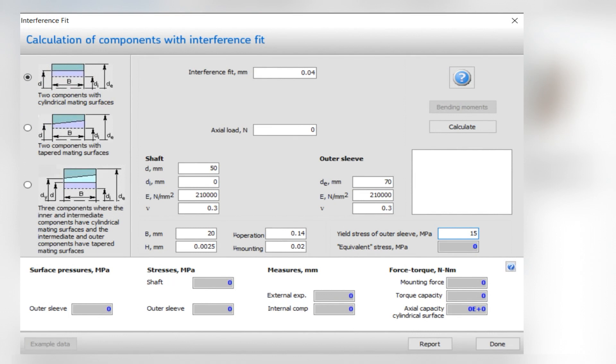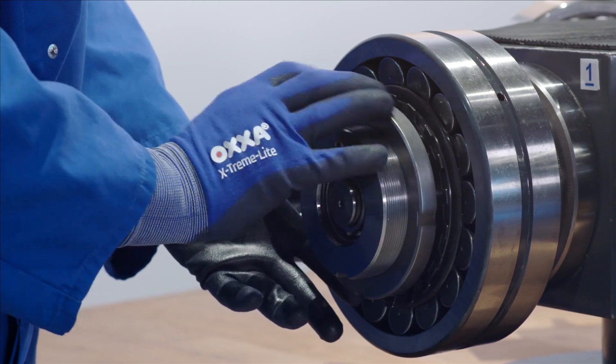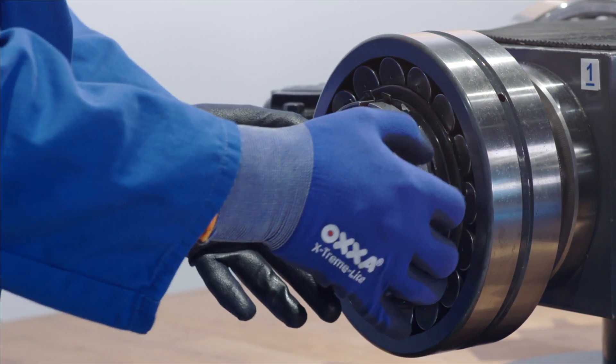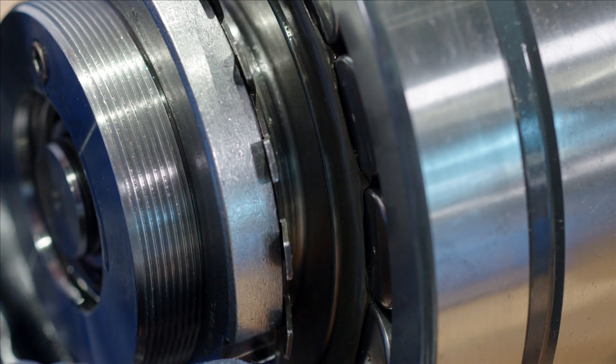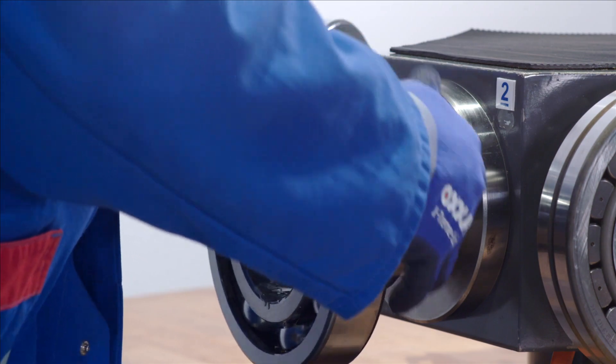If you are not sure what pressure is required, you can use the oil injection method program to select the pump with the right pressure for both bearings and other components with a tight fit. Our accompanying instructional videos will show you best practice for removing a component from a tapered shaft and a cylindrical shaft.